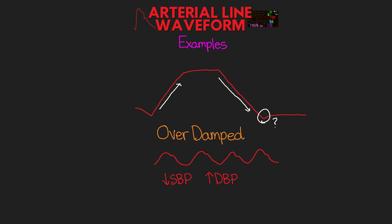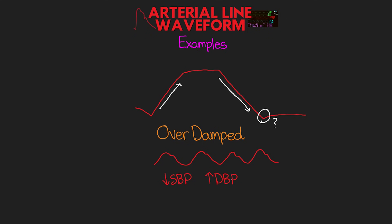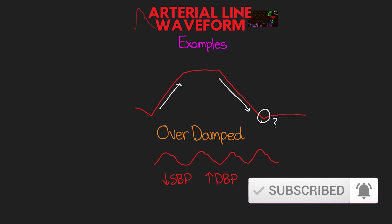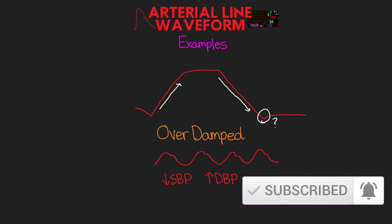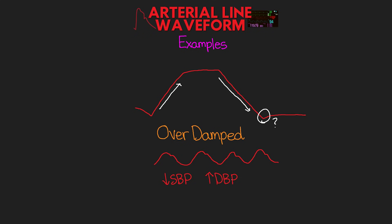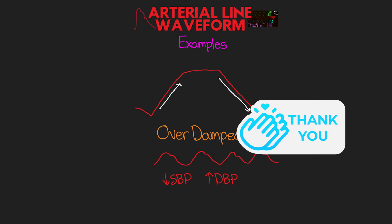Hopefully those examples help to cement some of this information. And hopefully this lesson was a good review of what it is that we're actually seeing with that arterial pressure tracing — it helps to have an understanding of what's happening at these different points and what that tracing actually tells us. I really hope that you guys enjoyed this lesson. If you did, please go down below and leave this lesson a like, as well as leave me a comment. Make sure you subscribe to this channel if you haven't done so already. A special shout out to the awesome YouTube and Patreon members — the support that you guys are willing to show me is truly valued and appreciated.